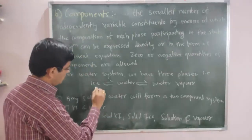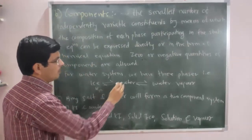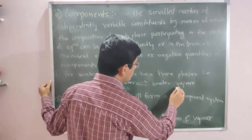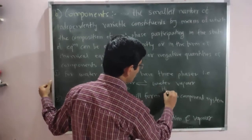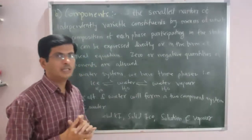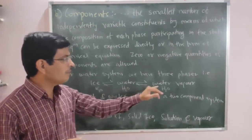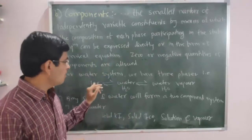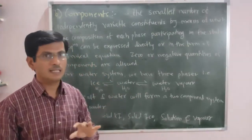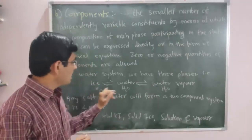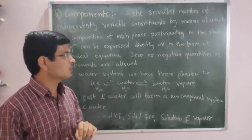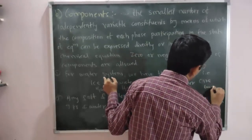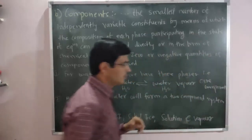To express the composition of each of these three phases, we use H2O. Ice is H2O, water (liquid phase) is H2O, and water vapor is also H2O. By considering only one chemical substance, that is H2O, we can explain the composition of all three phases. Therefore, this is a one-component system.